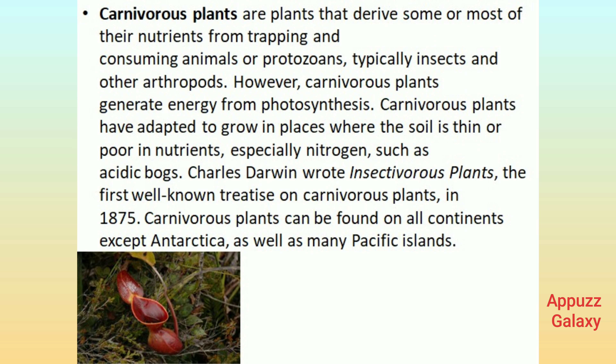Charles Darwin wrote Insectivorous Plants, the first well-known treatise on carnivorous plants, in 1875. Carnivorous plants can be found on all continents except Antarctica, as well as many Pacific islands.